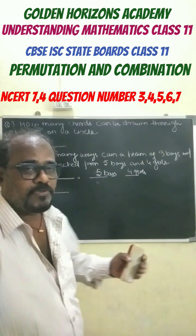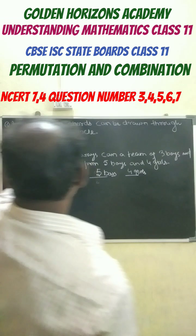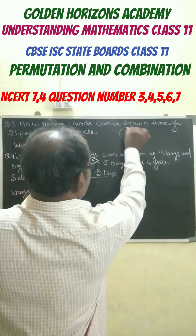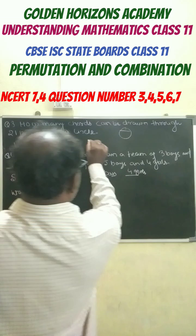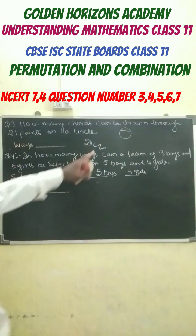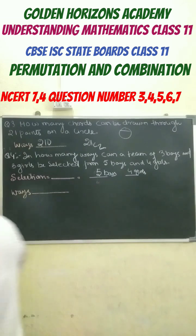Hello, myself Arun. Let us go with the questions of class 11. How many chords can be drawn through 21 points? We know that to draw chords, a minimum of 2 points is required. So our answer is 21C2. If you calculate 21C2, the answer will be 210 ways.